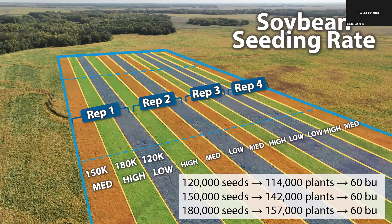Here are the actual strips we're testing. We've got four replicates comparing 150, 180, and 120,000 seeds per acre. We've got the different plant stands resulting from those seeding rates, and their average yield in the corner for this trial example. Soybeans are incredibly good at branching to fill in any spaces in the crop canopy, and we're really seeing that here with no differences — each resulting in 60 bushels per acre yields.